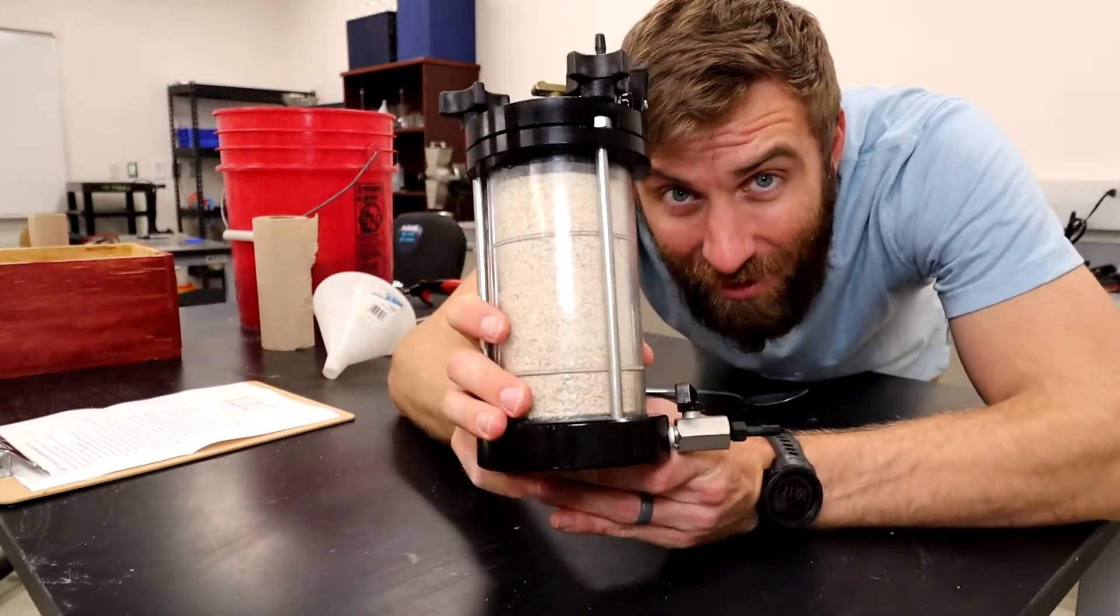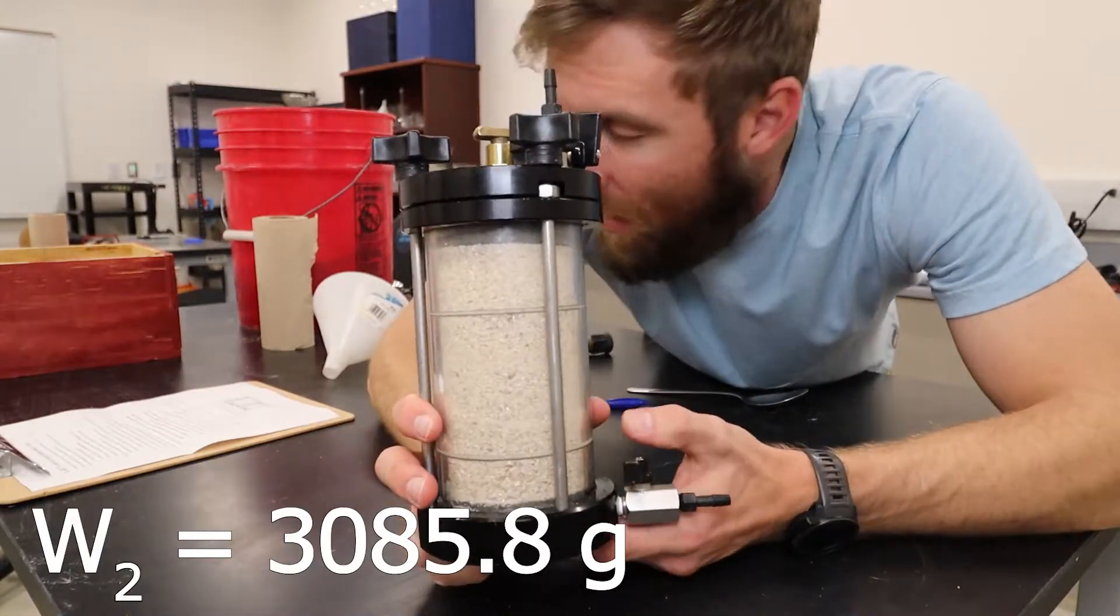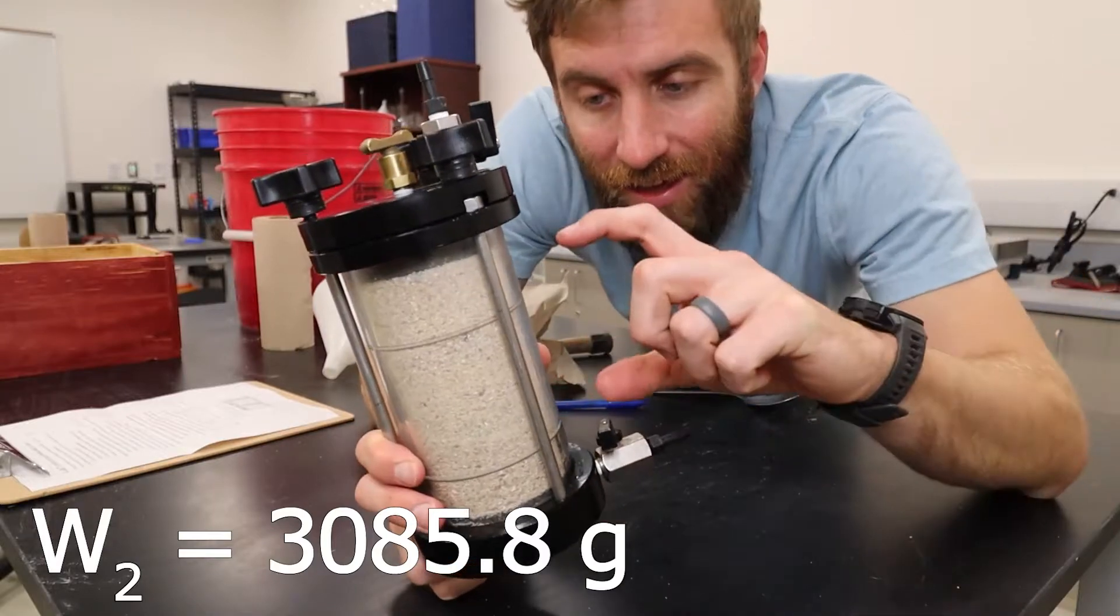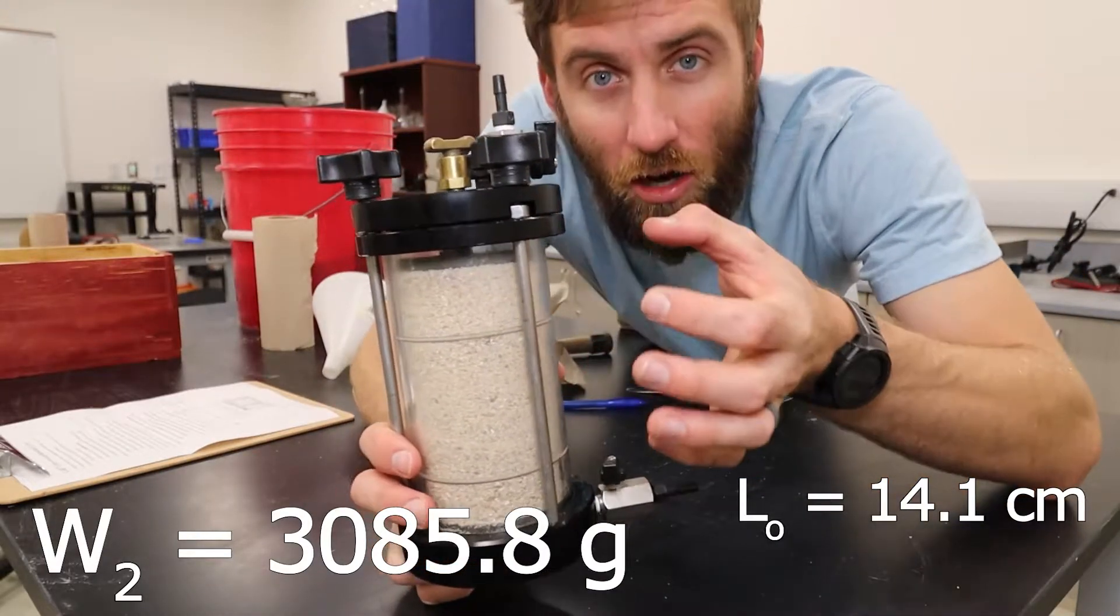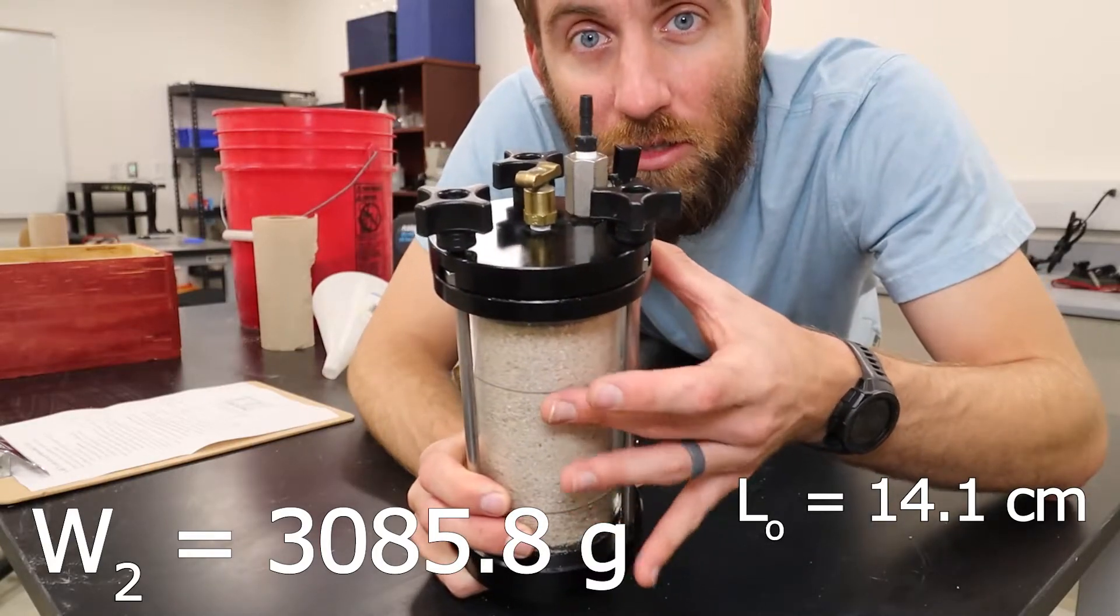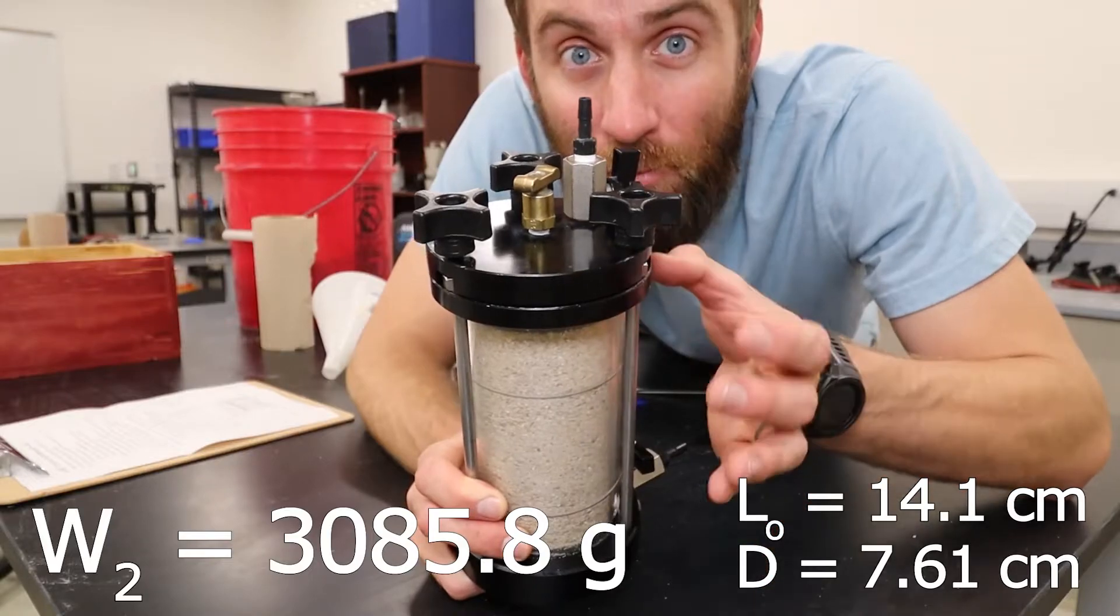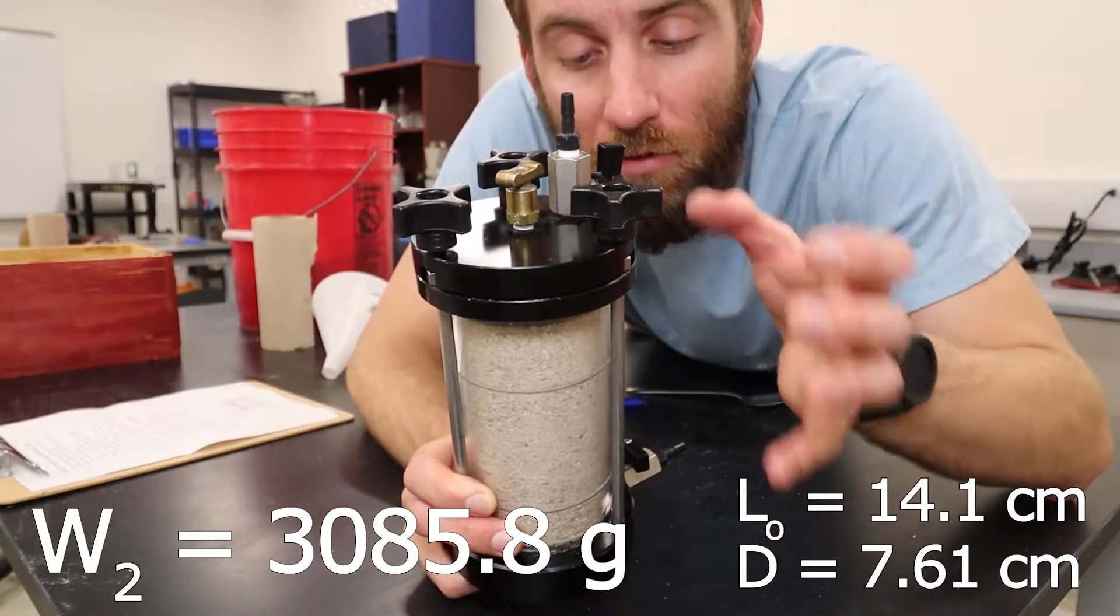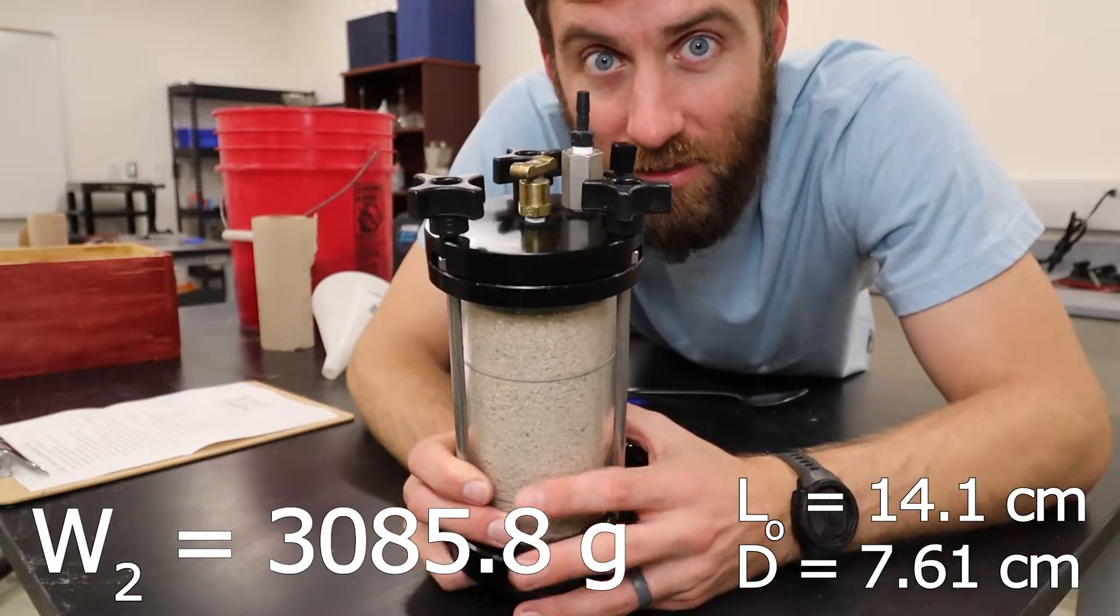Permeameter is set. We're going to take the mass of this - that's going to be your W2. And then we also need to take the length or the height of this specimen and also the inside diameter. It's important to take the inside diameter because we need to know the volume of the soil specimen for your density and your porosity calculations and all that stuff.